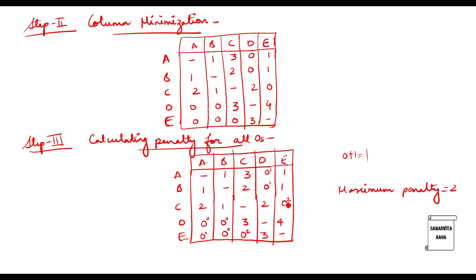The maximum penalty value is two, which is present in two places. You can randomly choose any one — you will still get the same answer at the end. I choose the one with penalty two and allocate C to E. I will cancel out the corresponding row and column. This is the allocation made: C to E.